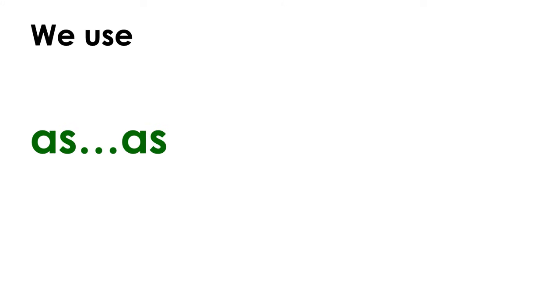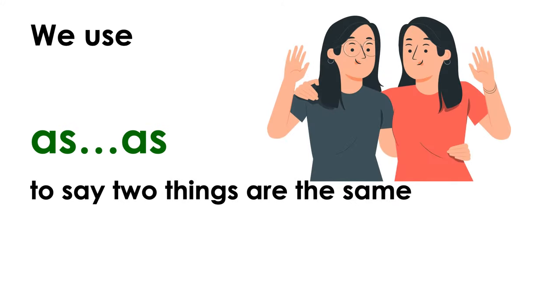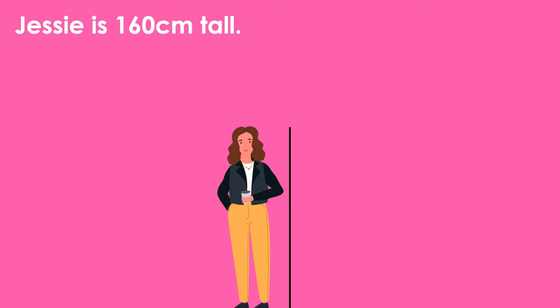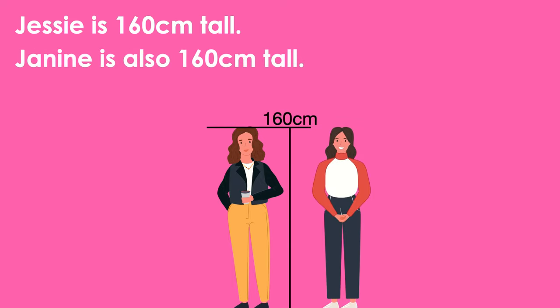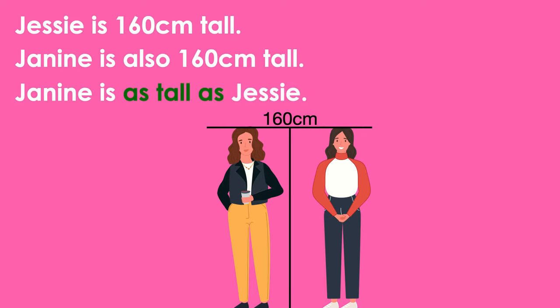We use as-as to say two things are the same. Jesse is a hundred and sixty centimeters tall. Janine is also a hundred and sixty centimeters tall. So we say, Janine is as tall as Jesse.